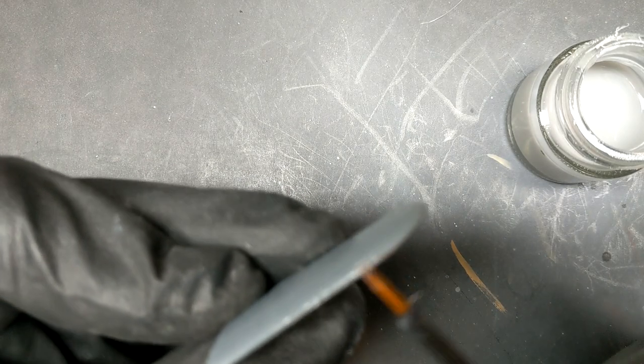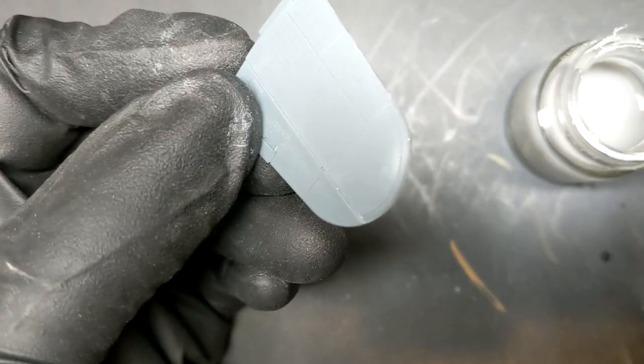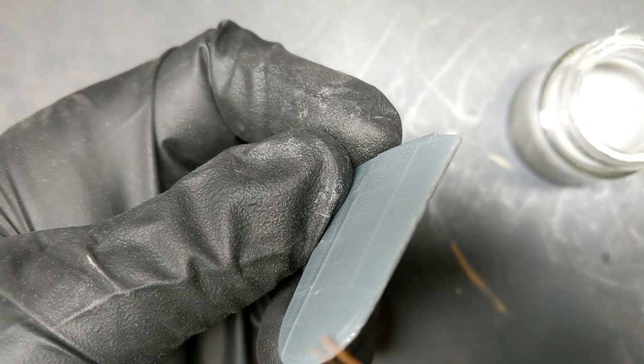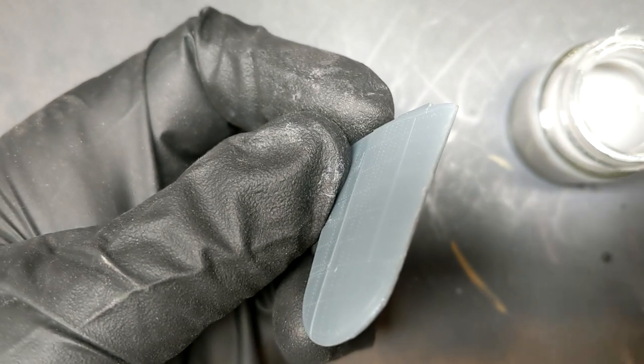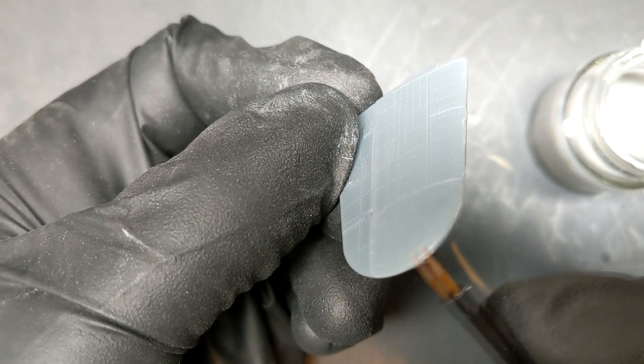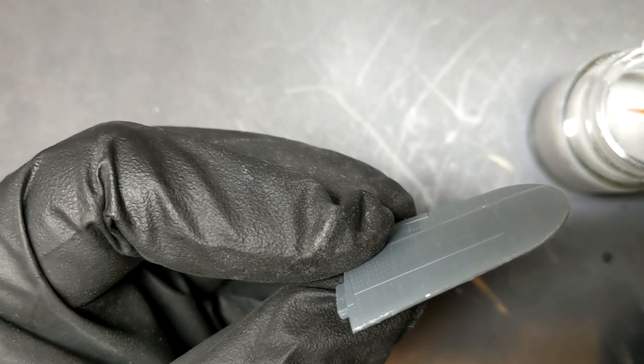So instead of like super glue or putties that just kind of sit there or blend a little bit as you sand them, the sprue goo itself, because it's made of the same material and it's got the liquid thinner in there, or sorry, the liquid glue, it bonds and melts right into the plastic. Which means a little less cleanup.